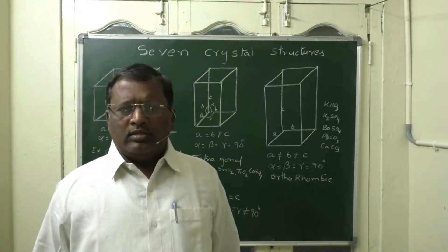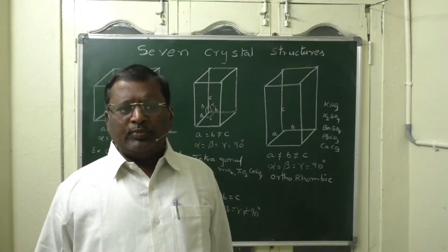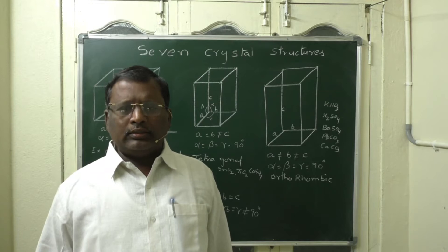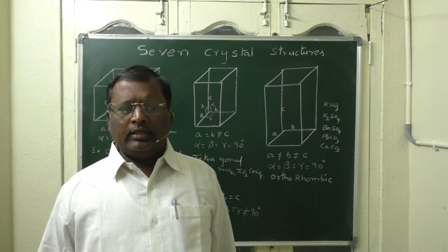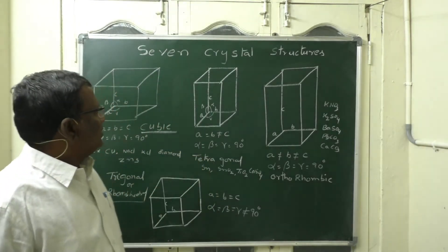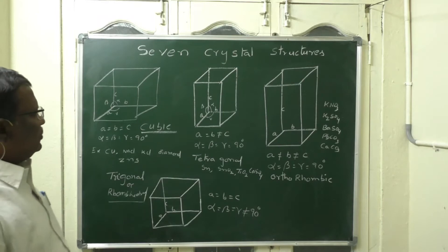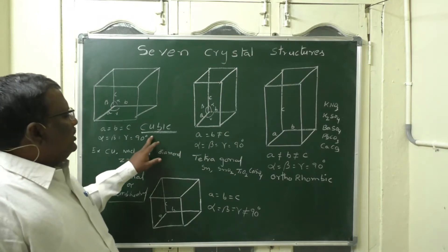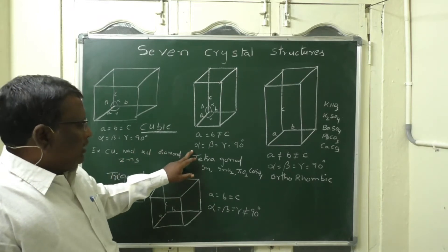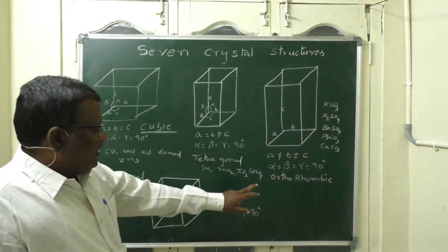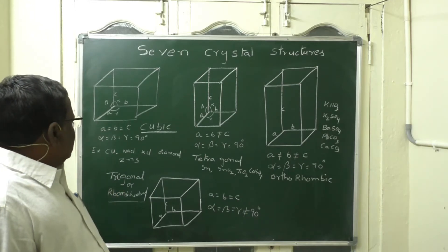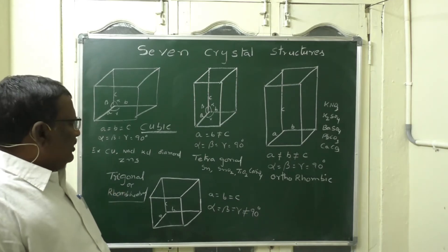There are seven possible unit structures. I am going to discuss the basic structures. The first is cubic, the second is tetragonal, the third is orthorhombic, and the fourth is trigonal.